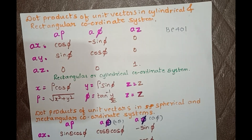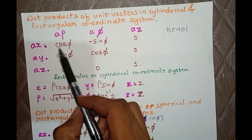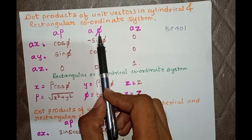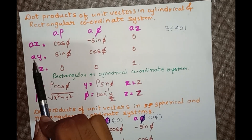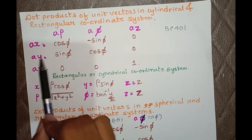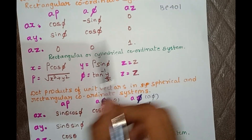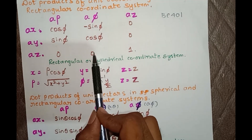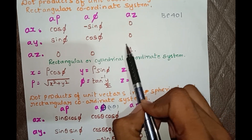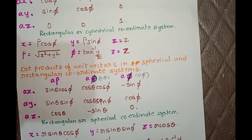Before watching this video, please try to make note of this table. Here: ax·aρ = cosφ, ax·aφ = −sinφ, ax·az = 0. Likewise, ay·aρ = sinφ, ay·aφ = cosφ, ay·az = 0. For z: az·aρ = 0, az·aφ = 0, az·az = 1. These are the dot products of the cylindrical and Cartesian coordinate systems — this is the important formula for conversion.